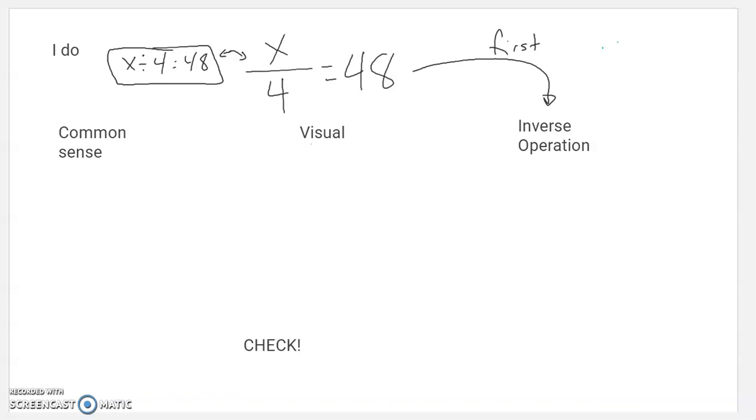But just in case you do, I'm going to do this first. I think this is the more reliable way to do that. So either way you want to write it, X divided by 4 equals 48 might be the less intimidating way. So again, always with the inverse operation strategy, I ask myself, what's happening to my variable? In this case, it's being divided by 4. So the inverse of dividing by 4 is multiplying by 4. So I'm going to multiply by 4 on both sides.